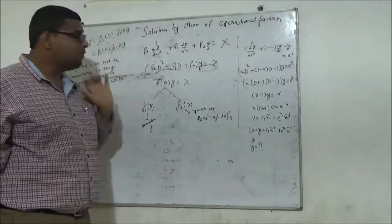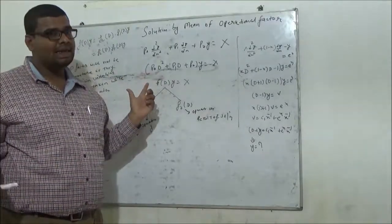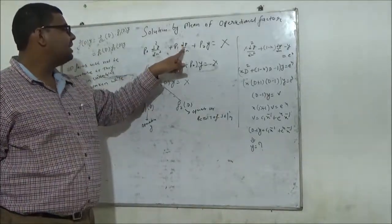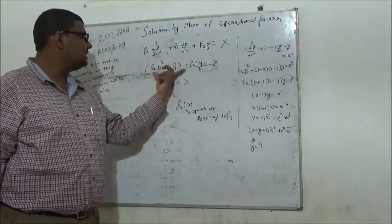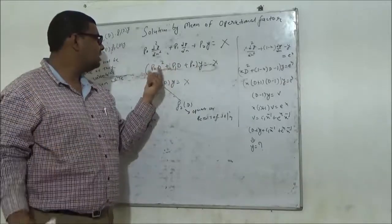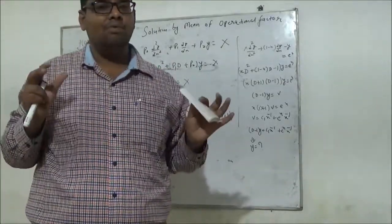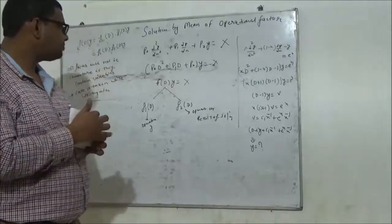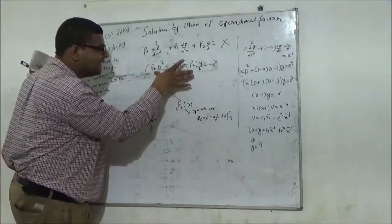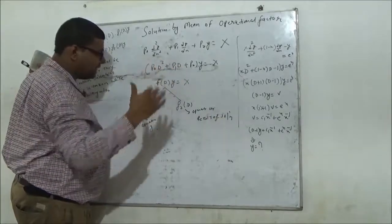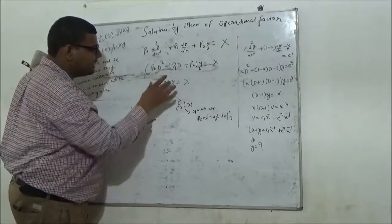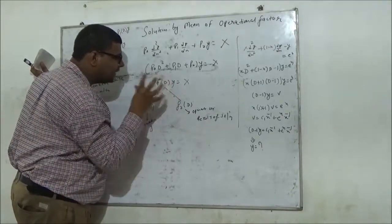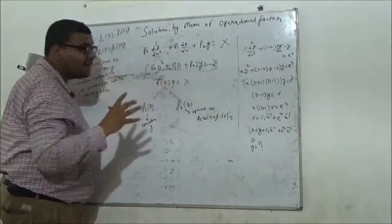We let D as the differential operator. So we can write d²y/dx² as D²y and dy/dx as Dy, and taking y common we get a polynomial in terms of D. I have to factorize this polynomial to get a concrete solution. We can let the whole expression as a function of D, which I will call f(D), since it contains terms in D, D², etc.